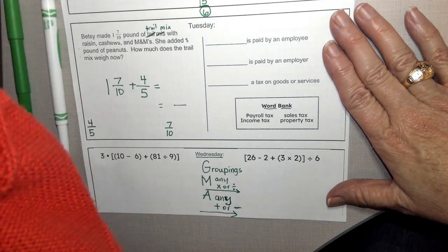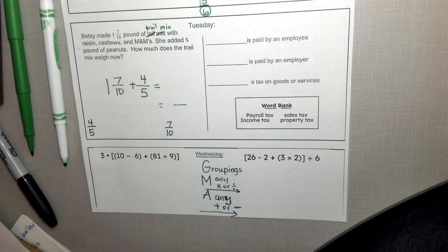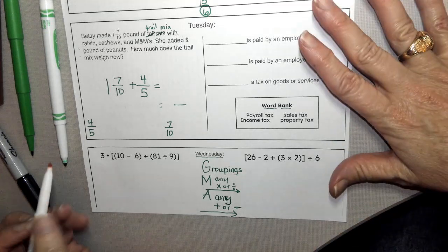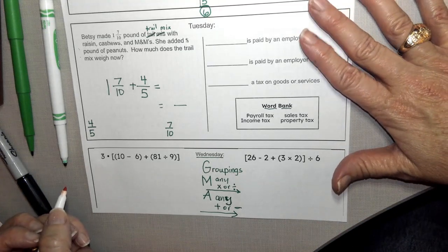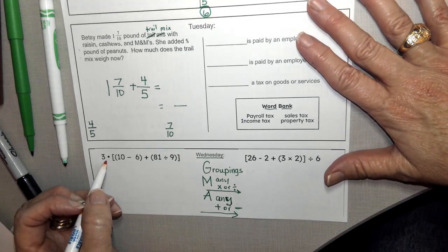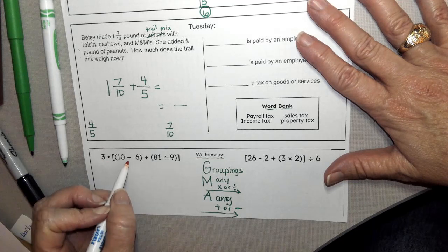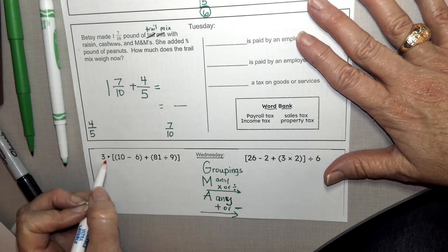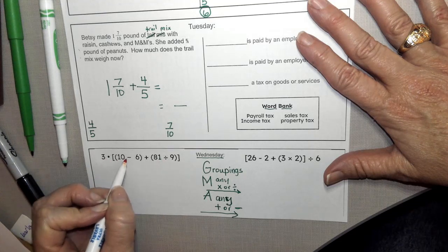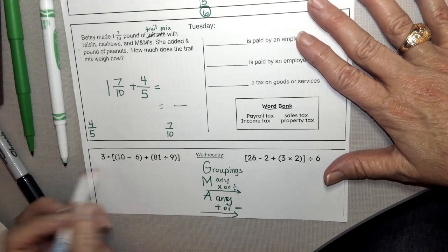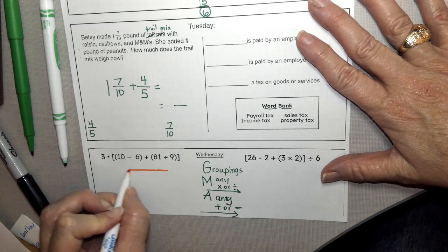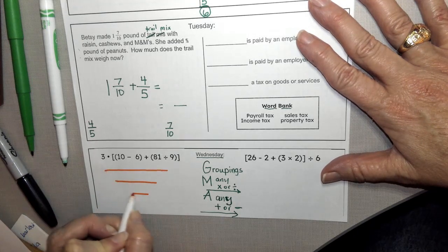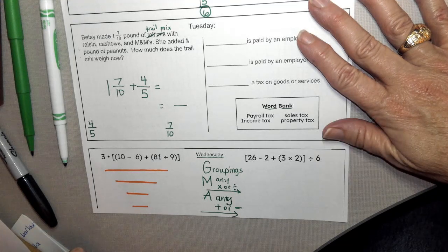And before you start, you may want to give yourself some lines for solving. So remember, the number of lines you need is the number of actions you see in your problem. So I see subtraction and adding and division and multiplying. So that's one, two, three, four actions. So I need four lines for solving to get my final answer.